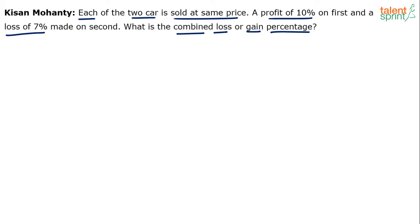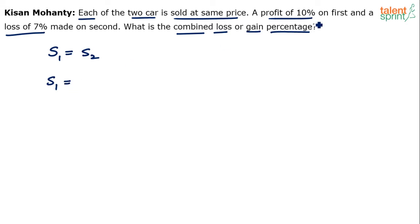Selling price of the first car is equal to the selling price of the second car. Now, what is the selling price of the first car? A profit of 10% is made. Profit of 10% means selling price will be 1.1 times the cost price.